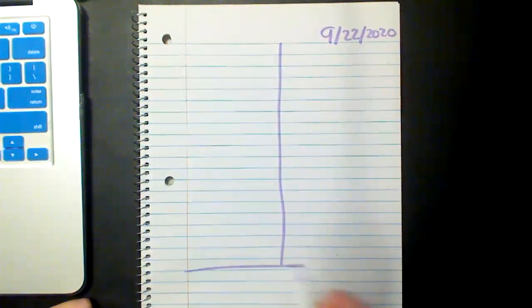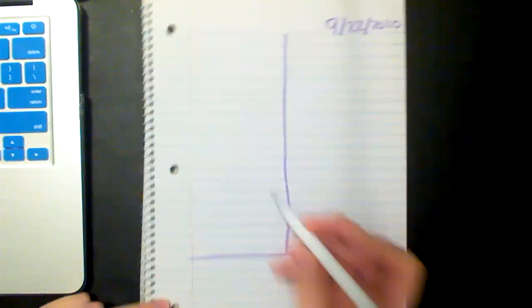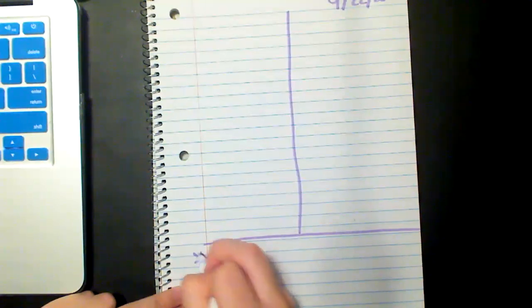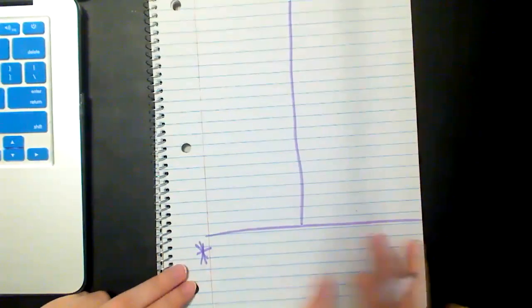So first let's go ahead and put our date. And then we're going to make our upside down T like how we always do when we do a vocabulary assignment. And then put a star at the bottom because this is the space for our frequency words.